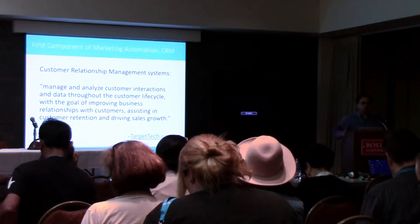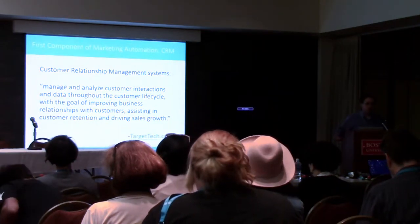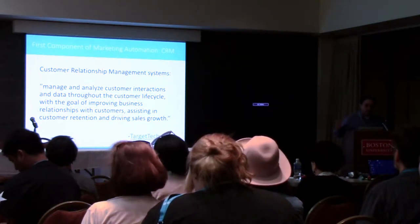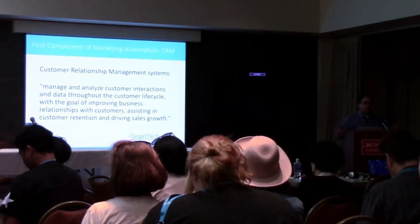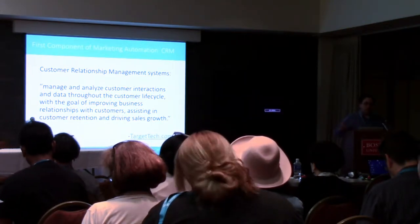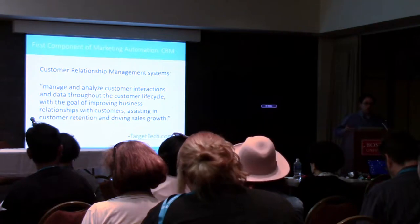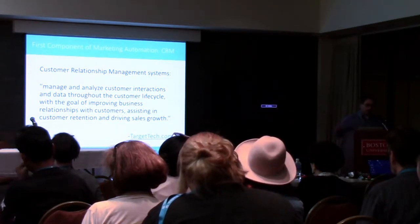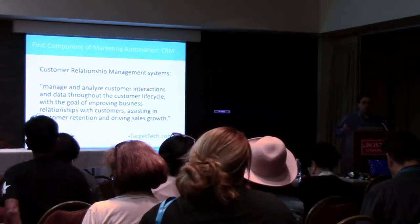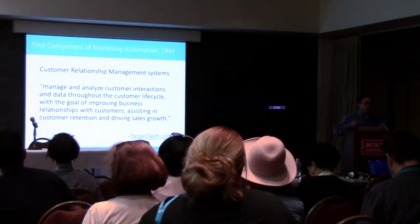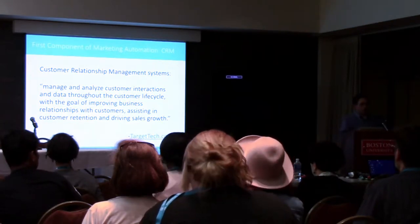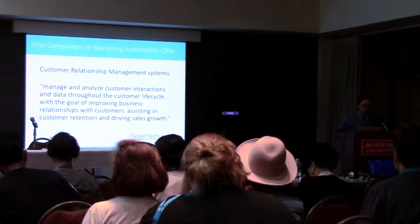Marketing automation works with a CRM, which is a customer relationship management system. A CRM is a really big database that is collecting information about your customers, your prospects, and people in your organization's ecosystem. It's helping you understand what those customers are about, what they want, what they're looking for you to provide, and where in the sales cycle or relationship process they are with you.